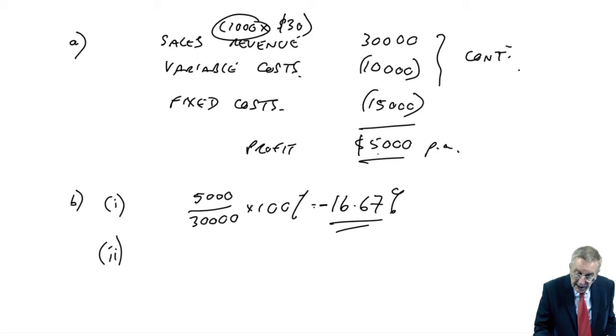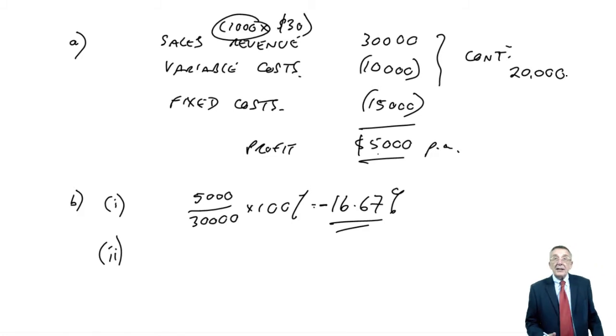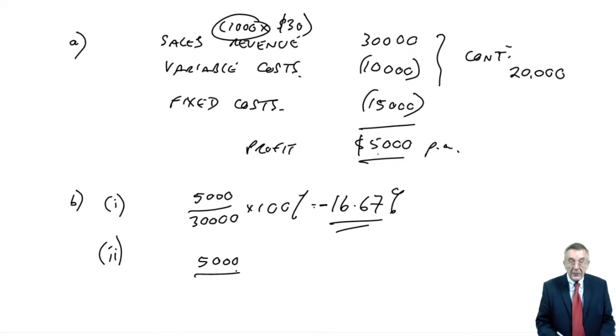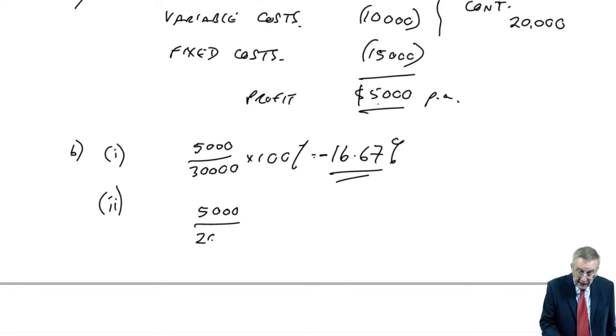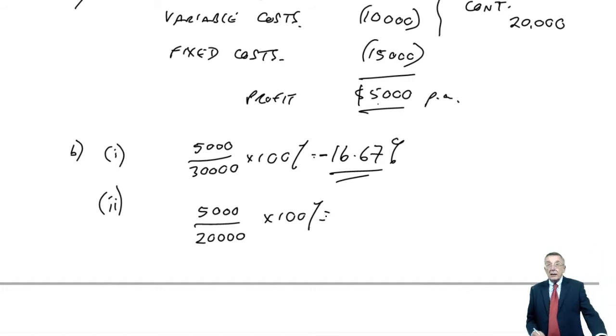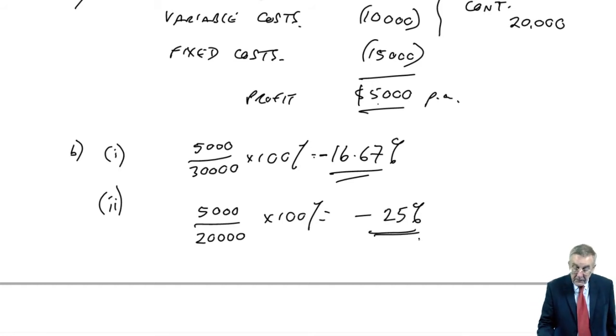The contribution is £20,000. It's that £20,000 that will change. 10% fall in volume, there'll be a 10% fall in the contribution. The total fall we can afford again, to get to a profit of zero, is £5,000. The item that's changing is the contribution of £20,000. And so, in percentage terms, we can afford, again, to fall, so it's negative, by 5 divided by 20, which is 25%.